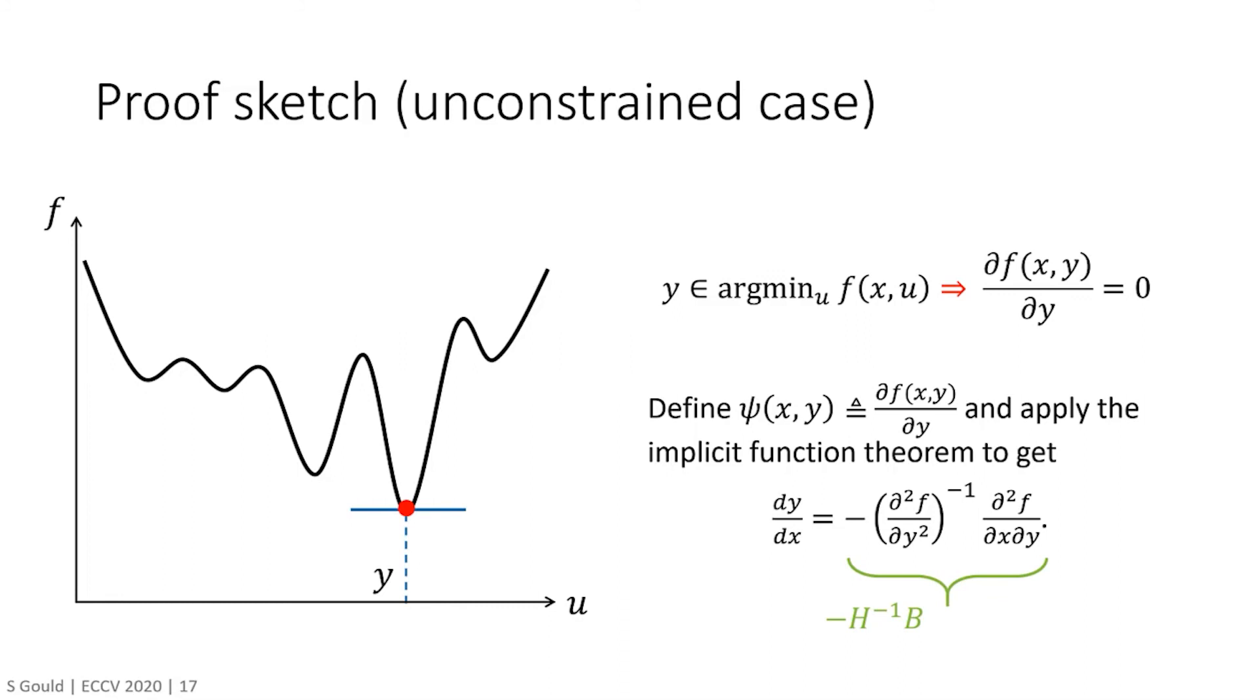Here is a sketch of the proof for the unconstrained case. Given that y is the solution of an optimization problem over some unconstrained variable u for function f, we know that the solution must occur when the derivative of the function f with respect to y equals 0. Defining this as the implicit function psi and applying the implicit function theorem gives us the result that we're looking for. Note that the problem does not need to be convex, although we will see later that convex optimization problems have nice properties that will help us avoid other difficulties.